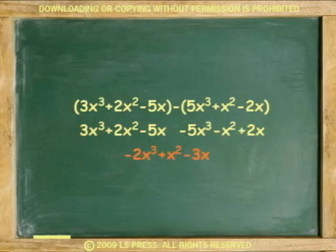Proceed with addition. Answer: negative 2x cubed plus x squared minus 3x.